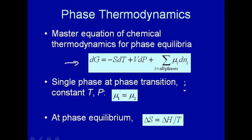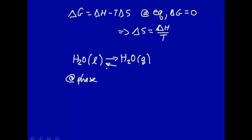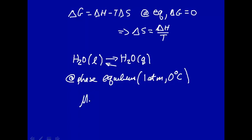Now to make that a little more concrete, let's take a phase transition — let's just take water — and we're going to say start with liquid, and we're going to have H₂O in the gas phase, and we're going to be in the phase diagram along one of those lines, so this will be in phase equilibrium. For water at one atmosphere, that would be zero Celsius — for example, one atmosphere and zero degrees C — where ice melts or freezes, and at those conditions you have an equilibrium. The chemical potential of water in the liquid phase is equal to the chemical potential of water in the gas phase. That's thermodynamically what we mean by phase equilibrium: the chemical potential of the substance in the two phases is equal at phase equilibrium.